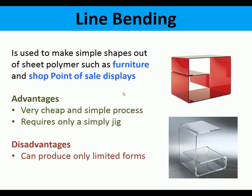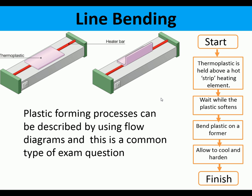Line bending is used to make simple shapes out of sheet polymer, such as furniture and shop point-of-sale displays and menus in restaurants. Advantages include that it is a very cheap and simple process, with very simple jigs — even just a block of wood. The disadvantage is that it can only produce limited straight molded forms.